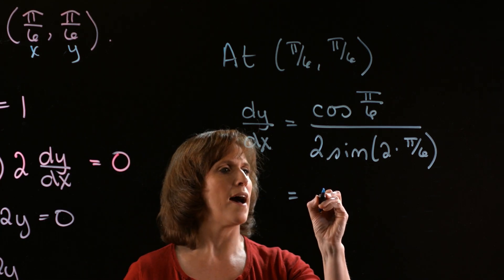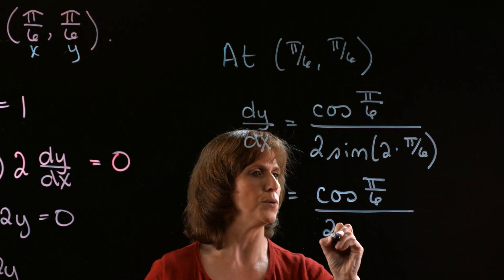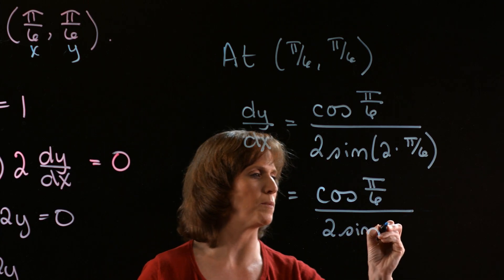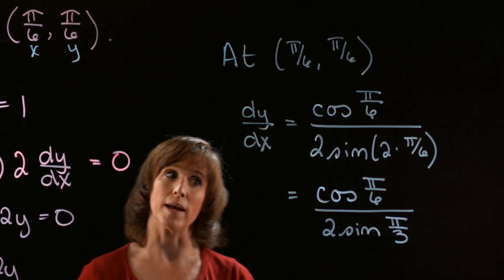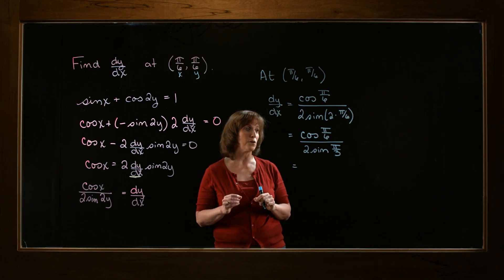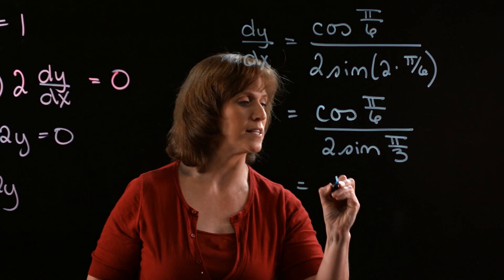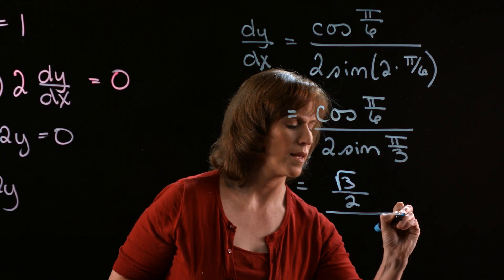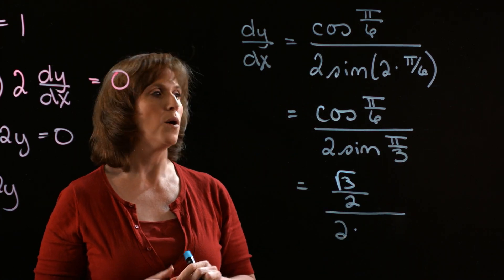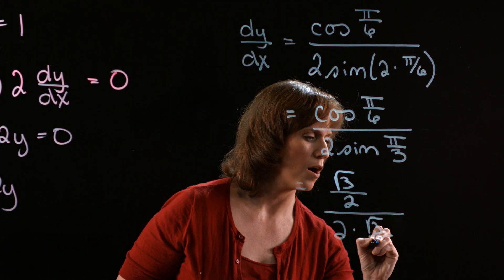All right. Let's do a little simplifying. I've got the cosine of π/6 divided by 2 times the sine of 2 times π/6, which is going to be the same thing as π/3. Now these are both special angles, so you should be able to evaluate the cosine and the sine of these special angles. The cosine of π/6 is √3/2. So I'm going to divide that by 2 times the sine of π/3. Well, the sine of π/3 is also √3/2.